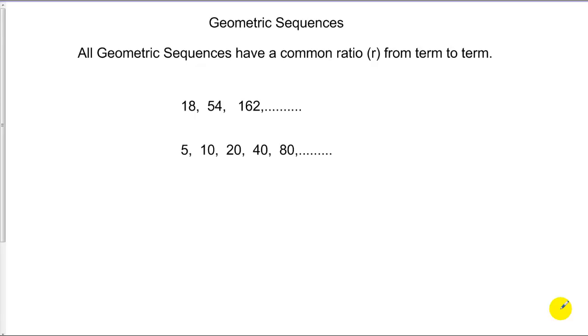We're going to move from arithmetic sequences to geometric sequences. And the difference between the two is that all geometric sequences have what's known as a common ratio from term to term, or a common multiple.